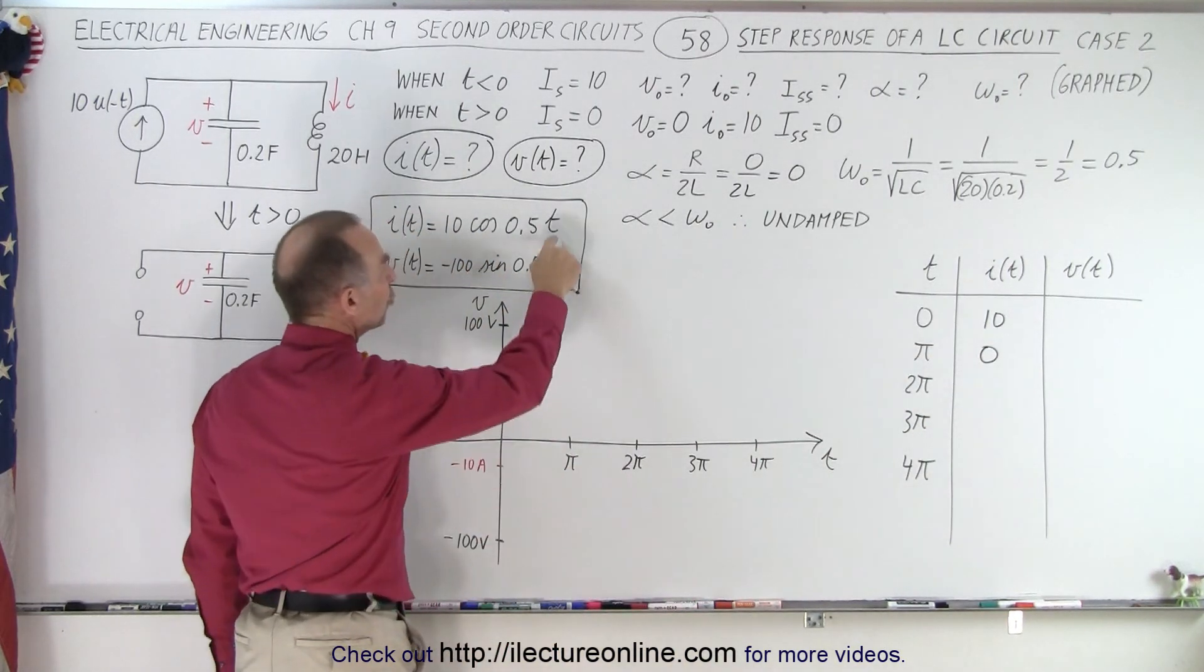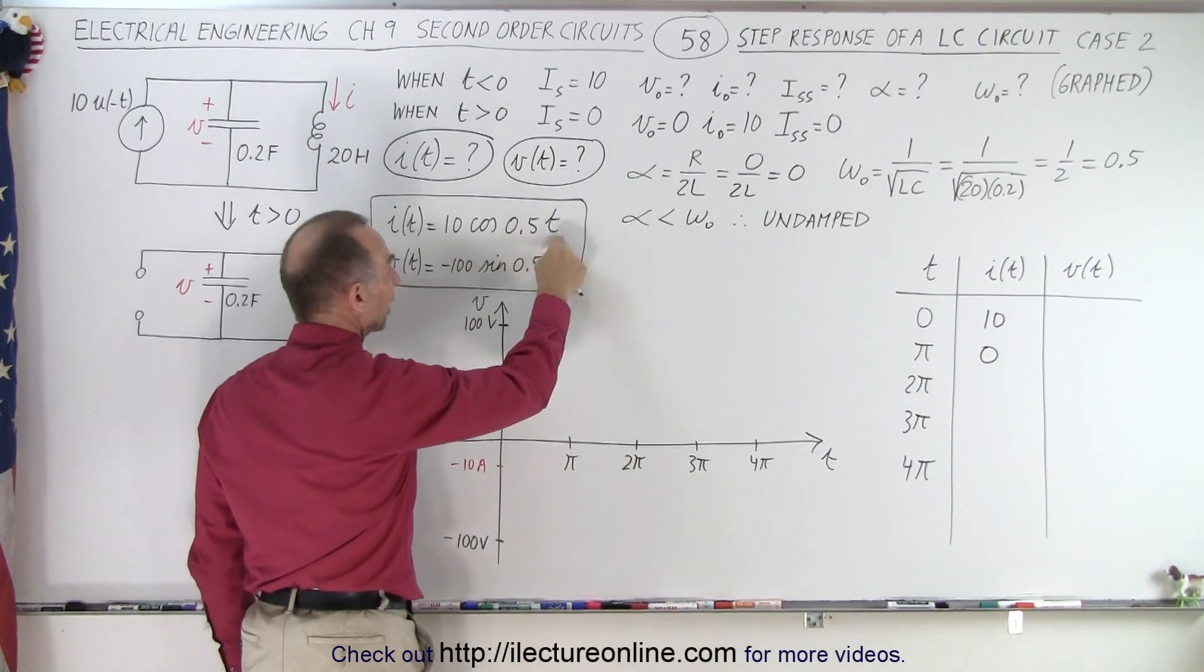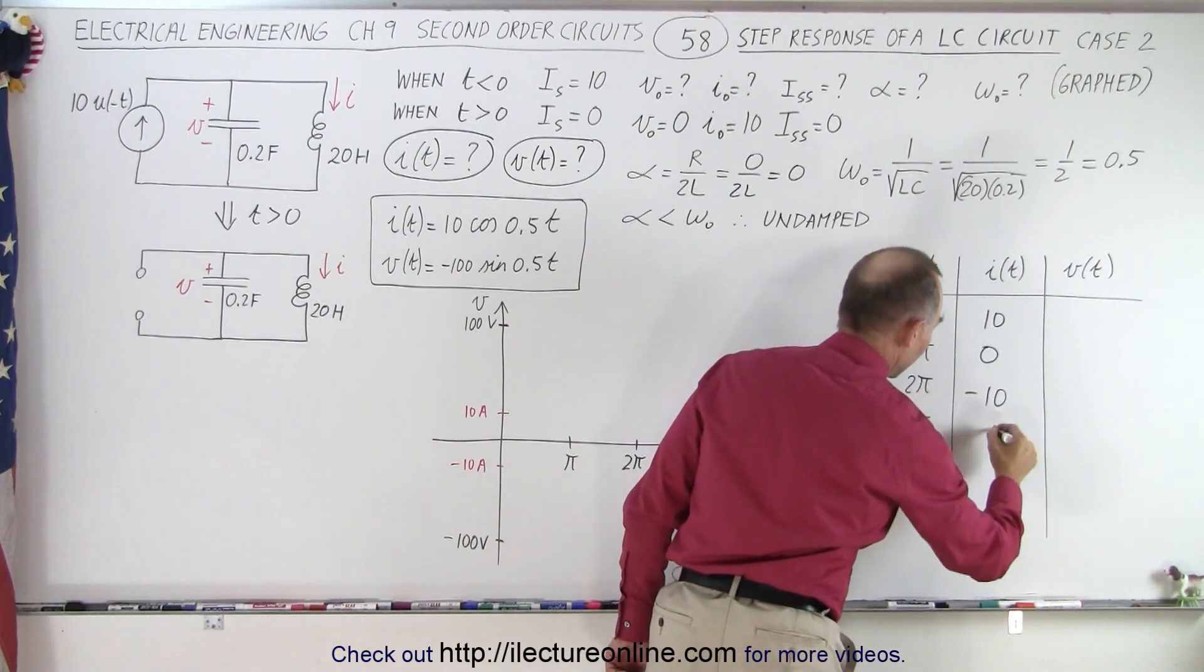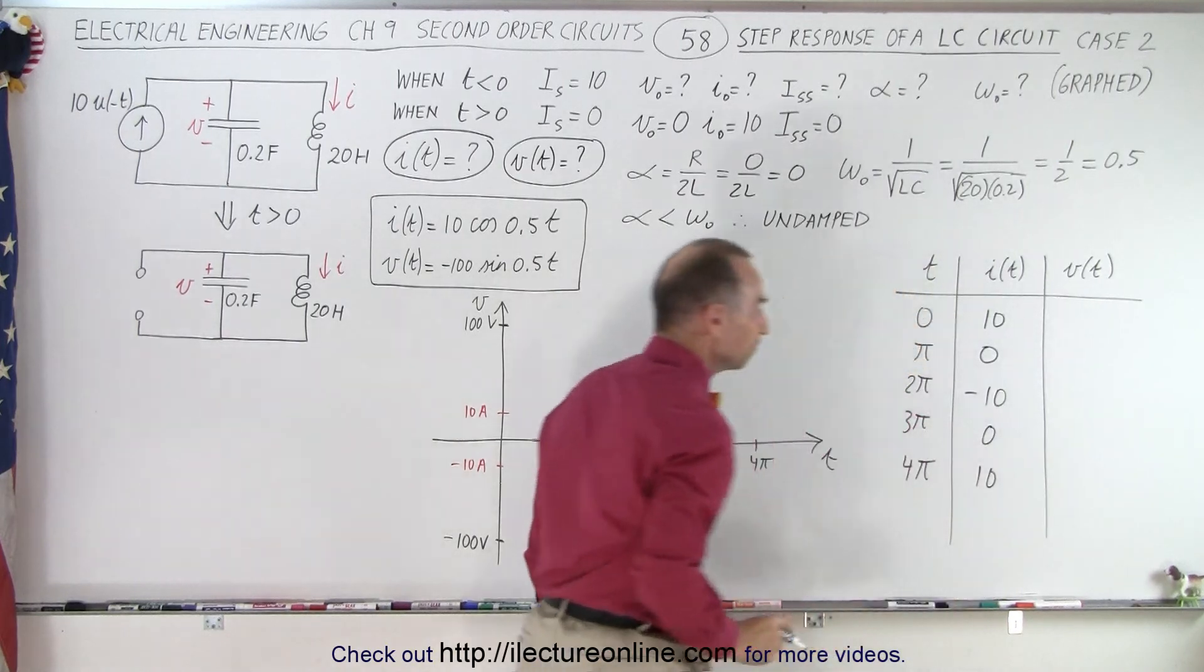When time is 2π times 0.5, which is π, the cosine of π is negative 1, so we get negative 10. And so you can see that this becomes 0 and that becomes 10 again.